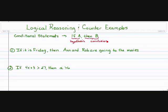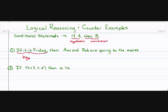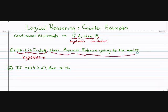Let's take a look at these first two examples. If it is Friday, then Ann and Rob are going to the movies — and to identify our hypothesis and conclusion: our hypothesis is our if statement. If it is Friday is our hypothesis. Then, Rob and Ann are going to the movies is our conclusion.